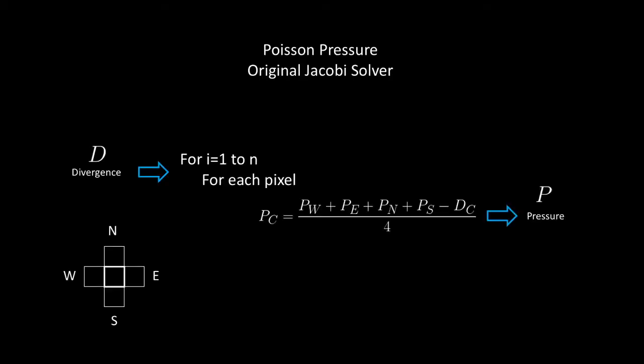In coding, it actually translates to something very simple. Given the divergence d, for n iterations and for each pixel, we update the pressure value of the central cell using its four neighbors. While the inner loop is a small kernel on GPU and very fast, the CPU cycle makes it very slow. So let's see how we can get rid of this CPU side.